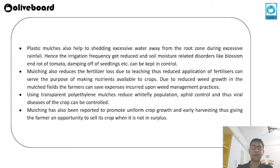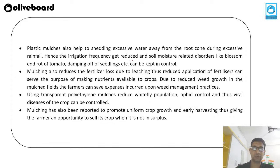Plastic mulches also help in shedding excessive water away from the root zone during heavy rainfall, preventing excessive water retention. Hence, irrigation frequency gets reduced — you don't have to irrigate the field frequently. Mulches also reduce fertilizer loss due to leaching and help make nutrition available in the soil, as well as reducing weed growth.